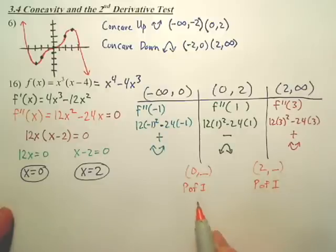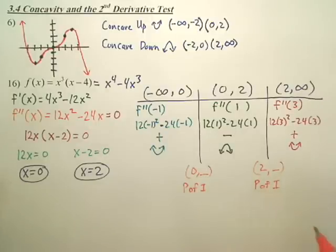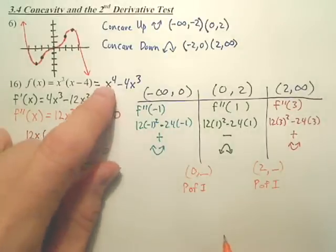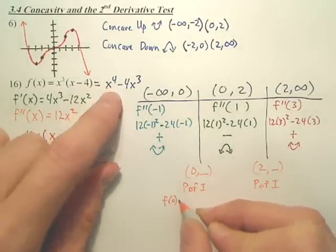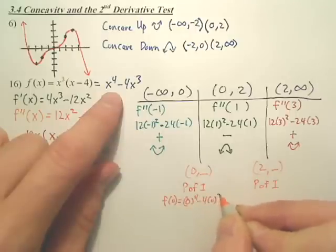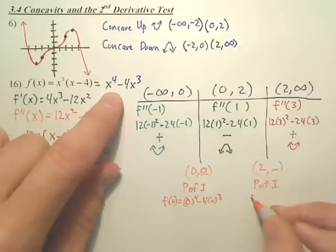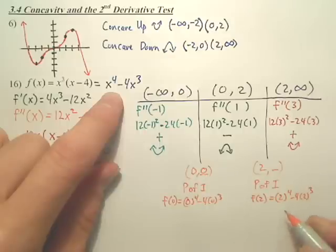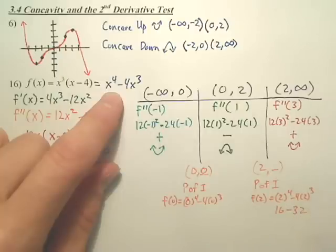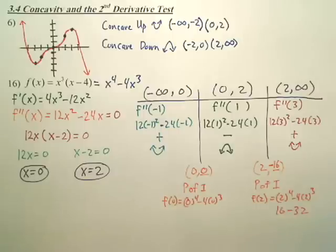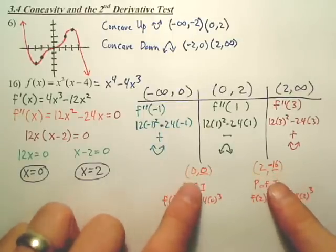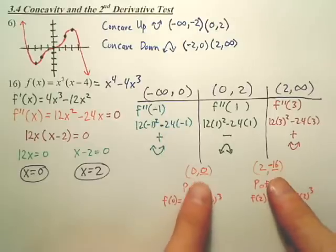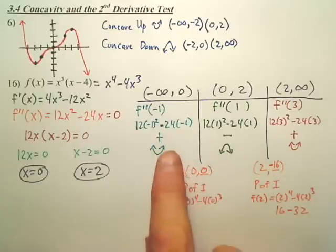How do you find that value? By the way, we said they're points of inflection. I kind of sometimes call it P of I. Is that easier than writing the big old word point of inflection? Okay, how do you find that number? Which equation do you plug it into? The original. Looks like 0. And then, we plug in 2 to the original. 2 to the 4th minus 4 times 8, 32. Is that negative 16? And points of inflection only exist where the concavity changes.